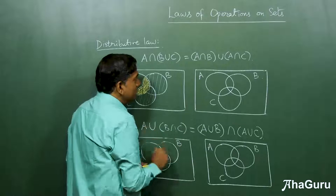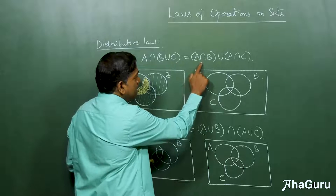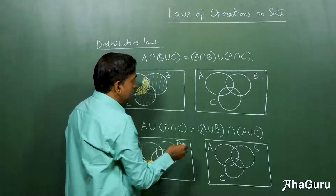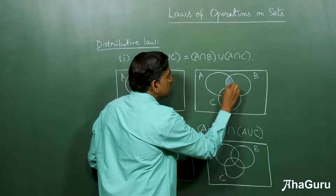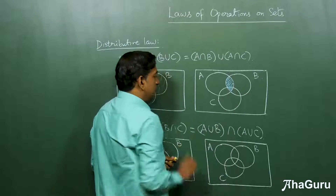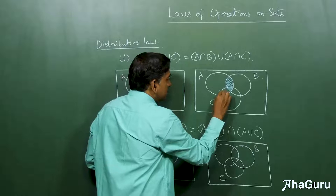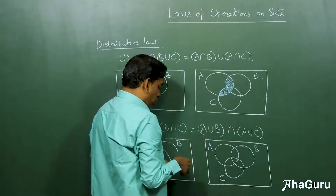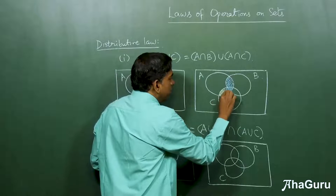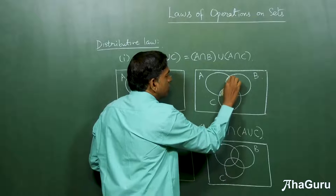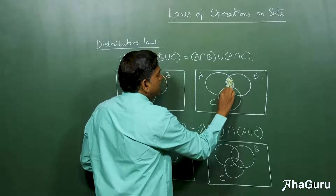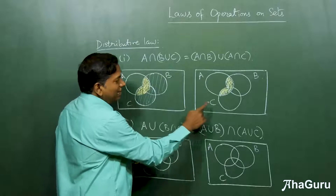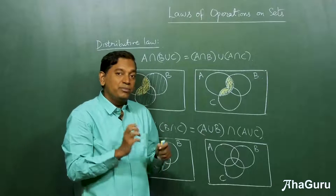Now let's come to the right hand side. First, we have to find A intersection B and A intersection C. A intersection B is this blue region and A intersection C is this blue region, and the union of both will be the combination of these two regions which I have done in yellow. And you can see that the left hand side and the right hand side give the exact same region.